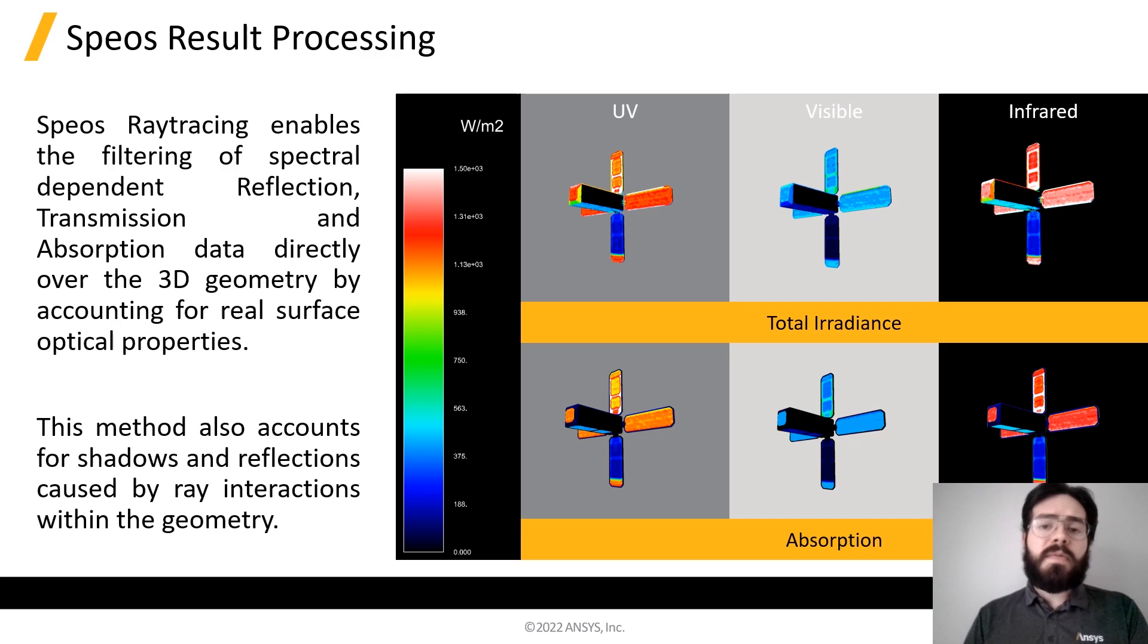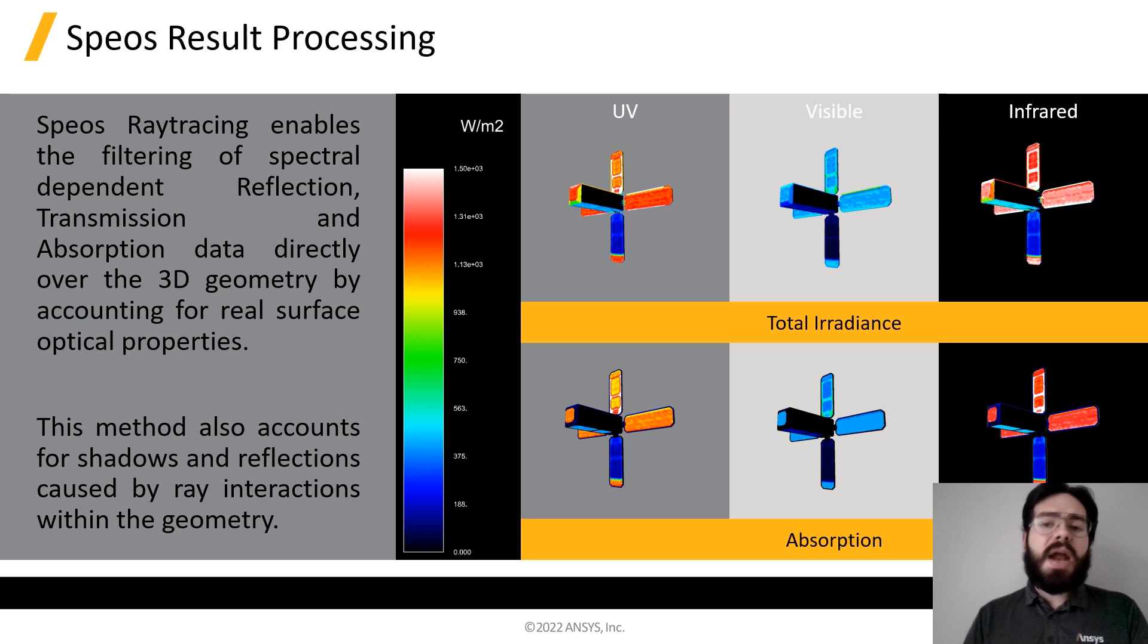By using a ray tracing tool, such as SPEOS, for this kind of analysis, you are able to account for the shadow effects produced by the geometry and radiation incident angle, as well as for the energy that is reflected between the surfaces of our objects of study. A big advantage of SPEOS is the capability to integrate energy directly over the 3D geometry and isolate the absorbed energy.